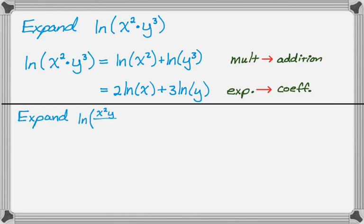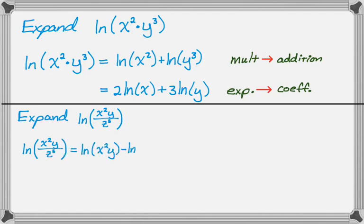Let's take a look at another one: the natural log of x squared times y over z to the 5th. The first thing I'm going to do is use the property that division inside becomes subtraction outside. So now I have the natural log of x squared times y minus the natural log of z to the 5th.